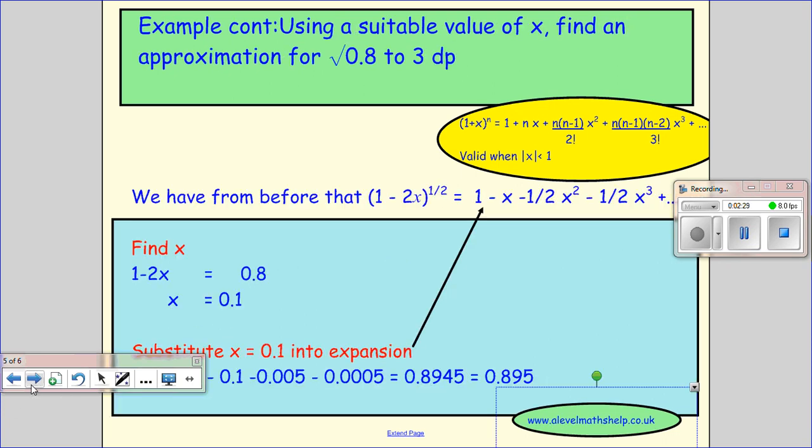And we did a similar question like this in our C2 module. Using suitable values of x, find an approximation for the square root of 0.8 to 3 decimal places. So what do we have? We have our expansion. We have the same power, so that means to make this look the same as that, what I want to do is make 1 minus 2x equals 0.8.